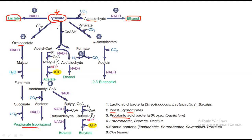The fourth type: pyruvate can be converted into acetolactate, and after that into acetoin, and then into 2,3-butanediol. This compound gives flavor to our food. The bacteria that conduct this process are Enterobacter aerogenes and Bacillus.